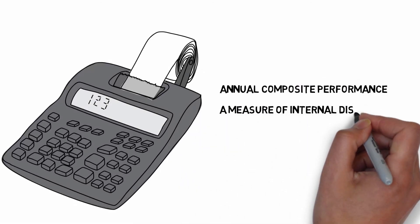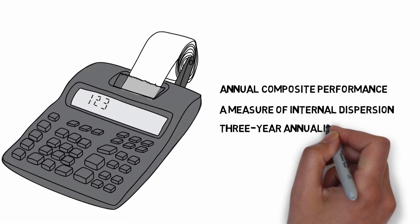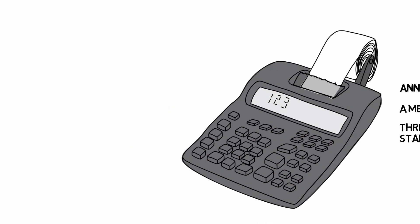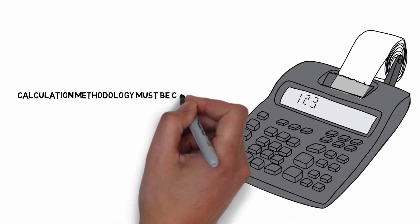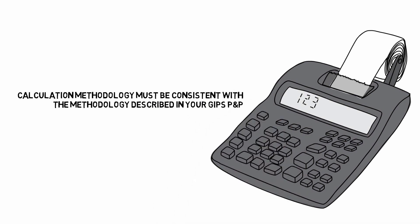a measure of internal dispersion, and three-year annualized ex-post standard deviation. The calculation methodology used must be consistent with the methodology described in your firm's GIPS P&P.